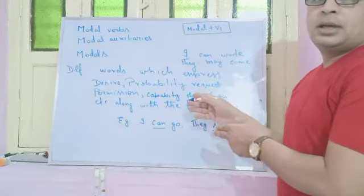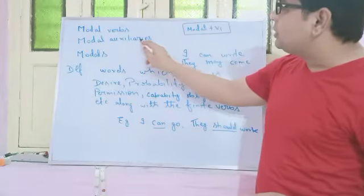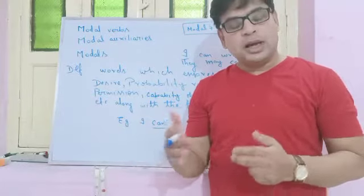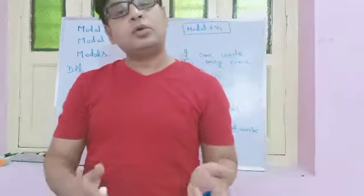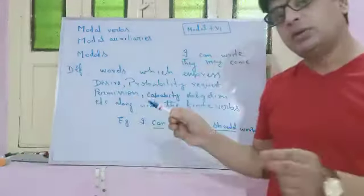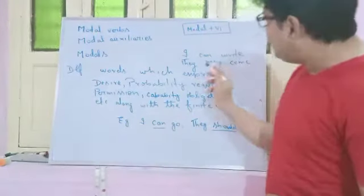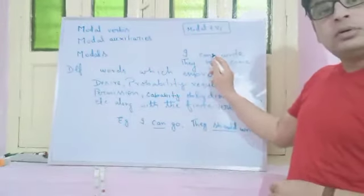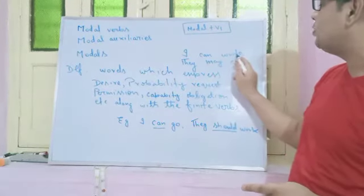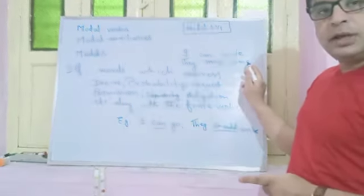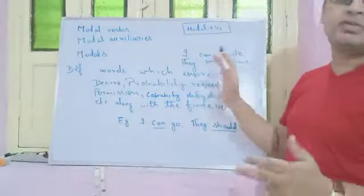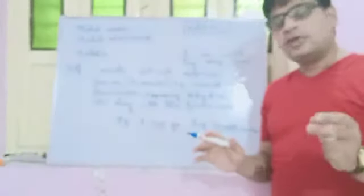Why are they called modal auxiliaries? We all know what auxiliaries are — auxiliary verbs are supporting verbs. A supporting verb always comes to support the main verb. In the same way, modal verbs also work like supporting verbs — they never come alone. For example: 'I can write,' 'they may come.' That is why they are called modal auxiliaries.